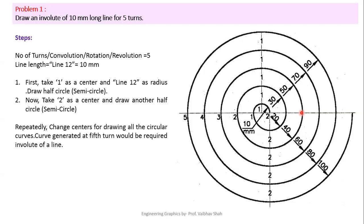Now change the center to point 1 again. Set the radius from point 1 to the current end point on your compass and draw another semicircle, which ends at point number 3. This third point denotes completion of another 180 degrees — another half turn. Then change the center to point 2, take radius 2 to 3, and draw another semicircle. This completes the third turn.